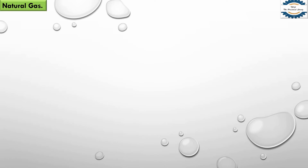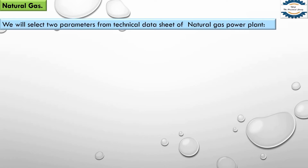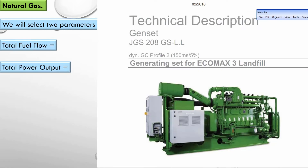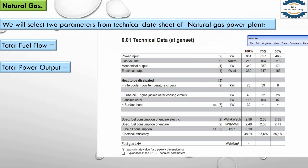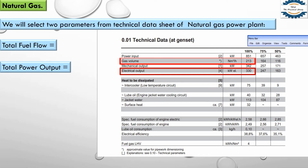Let's move on to natural gas. To calculate the specific fuel consumption and heat rate for a natural gas power plant, we selected two parameters from the technical data sheet of a Jenbacher gas generator, model JGS 208 GS-L.M. The first parameter is electric output: 330 kilowatt at full load. The second parameter is gas volume: 213 cubic meters per hour.